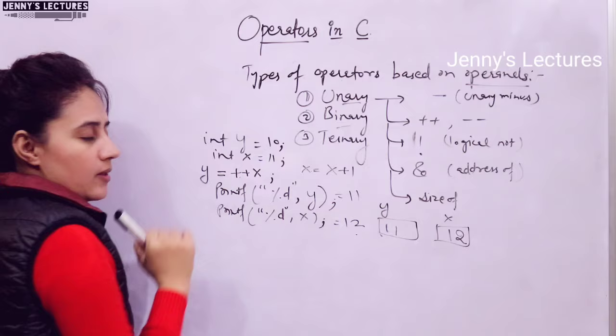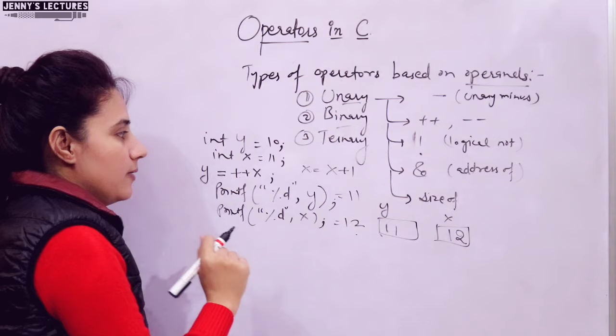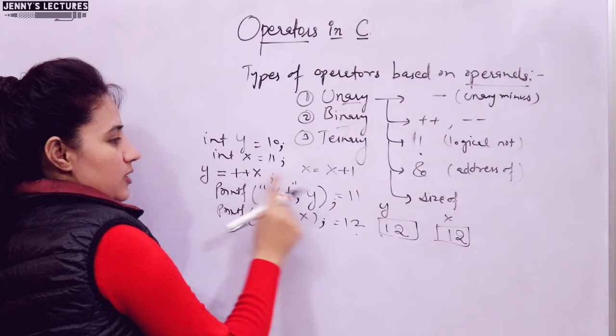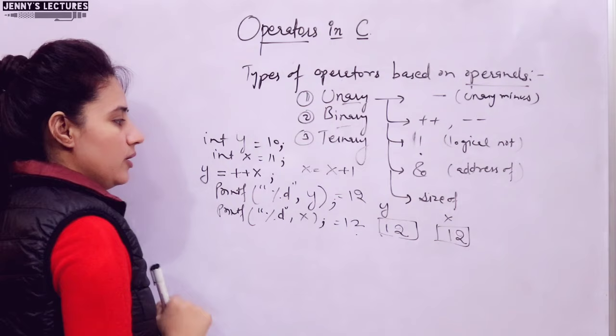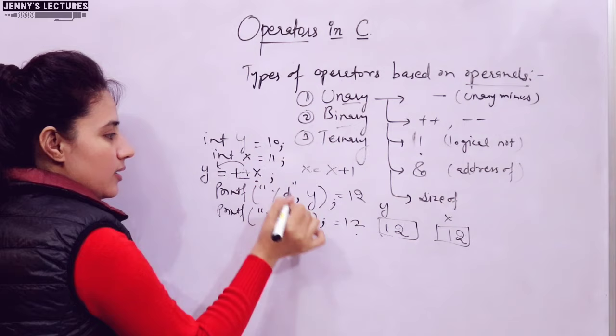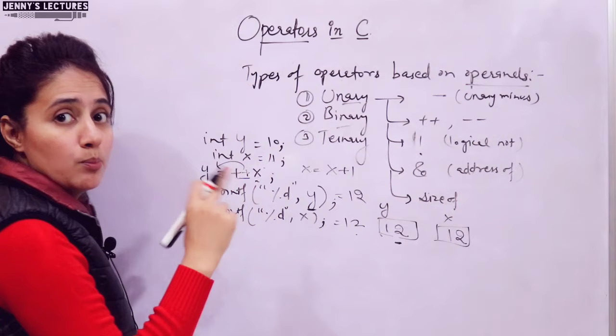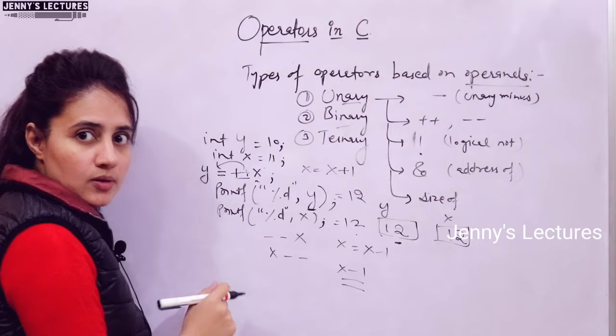With prefix ++x, the value of x is altered before execution of the current line. So x becomes 12 and y also gets 12. For decrement: --x is prefix and x-- is postfix, meaning x = x - 1. The same prefix/postfix rules apply to the decrement operator as to increment.